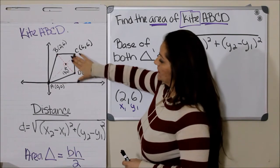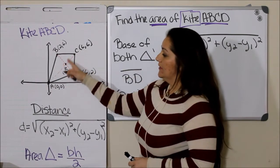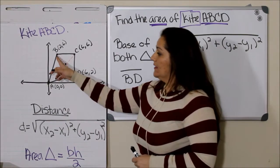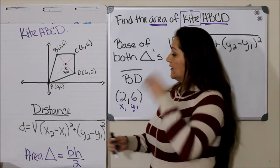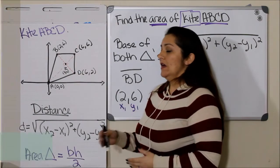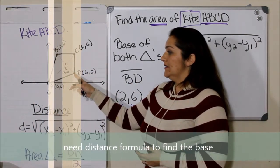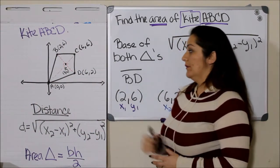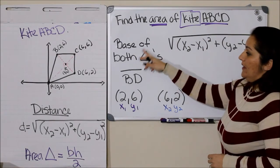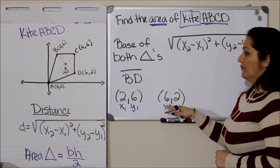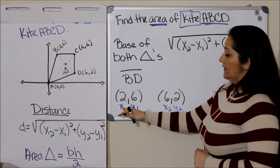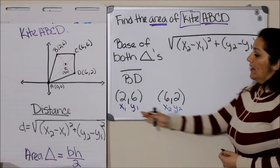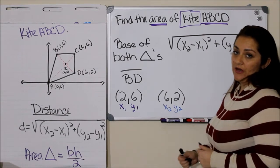Focusing on the top piece, to find the area of this triangle I want to take base times height divided by two. Since the base is not in a position where I can count it, I'm going to use the distance formula to find the base. The good thing about finding the base between B and D is that it is the base for both the smaller triangle and the larger one, so I only have to do that once. I have both points written here with the first point labeled X1 and Y1 and the second labeled X2 and Y2.